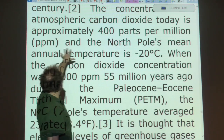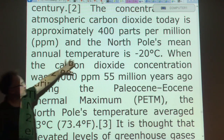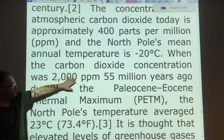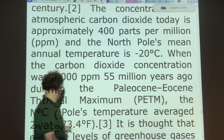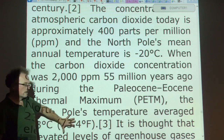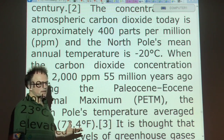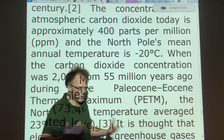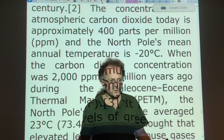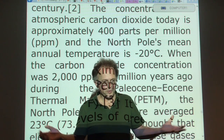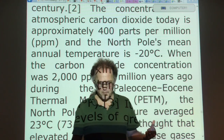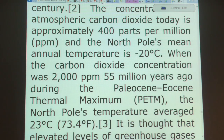We're at about 400 parts per million CO2 today. The North Pole mean annual temperature is about minus 20 degrees Celsius. When CO2 concentration was 2,000 ppm — five times higher — that was 55 million years ago, during the Paleocene-Eocene Thermal Maximum, the PETM. The North Pole's temperature averaged 23 degrees Celsius or 73.4 degrees Fahrenheit. Obviously we're talking about a planet with no snow and ice in the north. This is the direction we're heading — rapidly losing sea ice and snow cover. Feedbacks kick in, we get methane burps, equalization of temperature with latitude. You're going through abrupt climate change if this happens very quickly, which is where we're heading at rapid speeds right now.